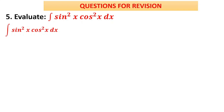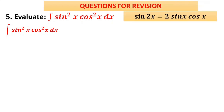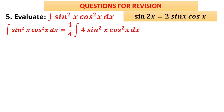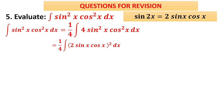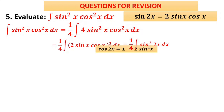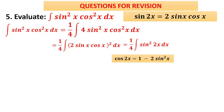Question 5: ∫sin²x cos²x dx. Using the formula sin 2x = 2sin x cos x, multiply and divide by 4: 4sin²x cos²x = (2sin x cos x)² = sin²2x. So the integral becomes (1/4)∫sin²2x dx. Now apply the formula cos 2x = 1 − 2sin²x; in the same form, cos 4x = 1 − 2sin²2x, giving sin²2x = (1 − cos 4x)/2.